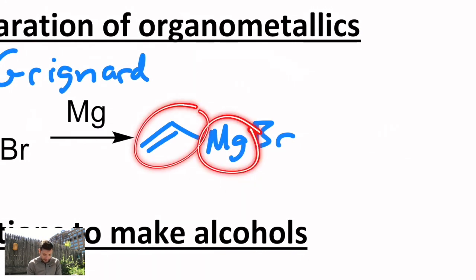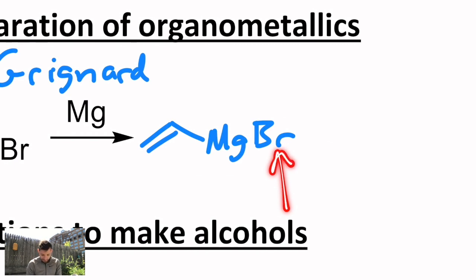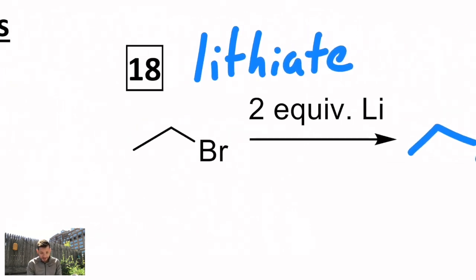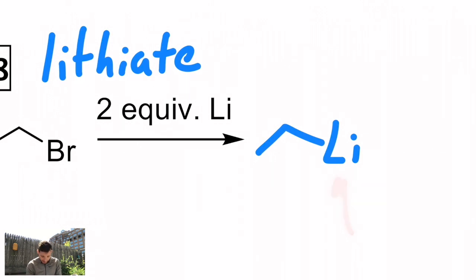That's why in the Grignard, you still have the halogen coordinated into the compound, but in the lithiate, you don't. The bromide went with another equivalent of lithium, it would be the lithium salt.